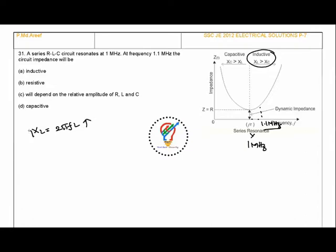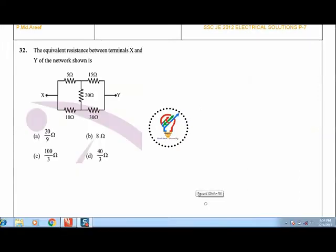For capacitive reactance, XC = 1/(2πFC). If frequency increases, XC decreases. So XL becomes more dominant than XC above resonance frequency. Below resonance frequency, XC would dominate. The answer is inductive.